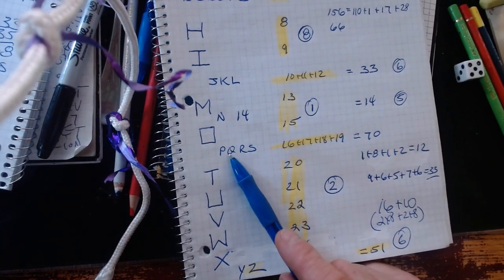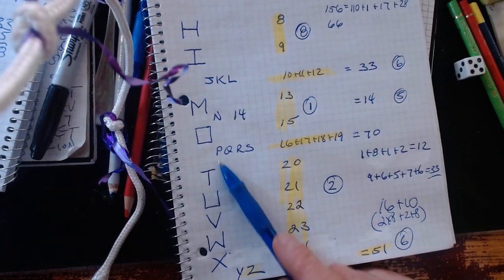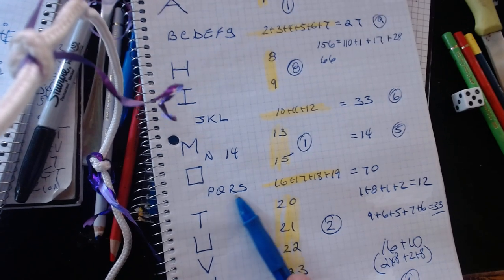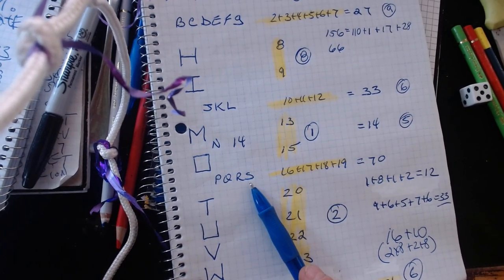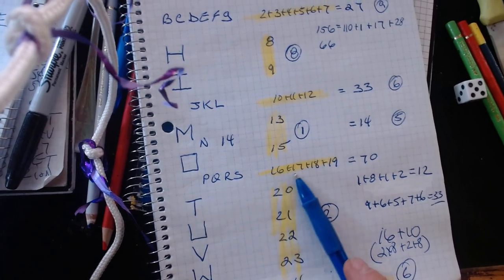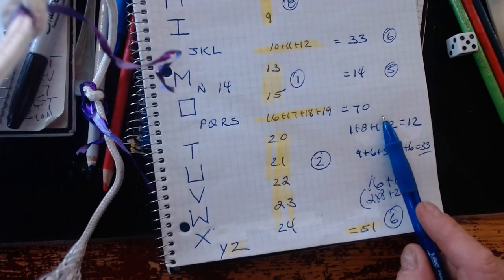After that is O. Then you have between O and T, these are the replica letters. You have P, Q, R, S. PQRS is absolutely perfect. It goes on the telephone on the seven key. And it's 16, 17, 18, 19 equaling to 70.